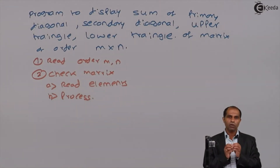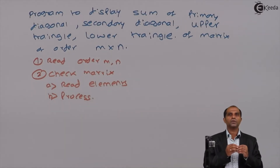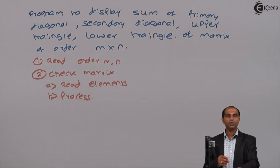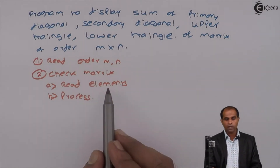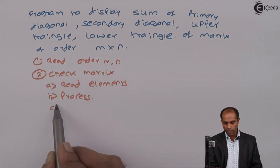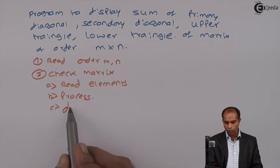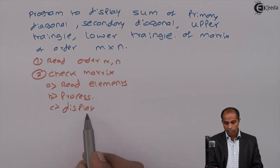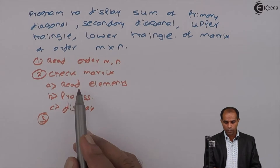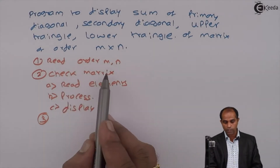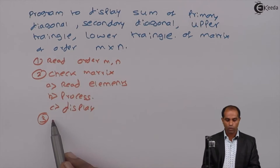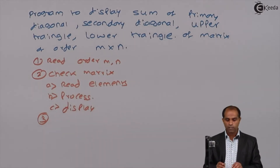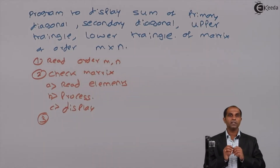First of all I have to read the order and then I'm supposed to check whether the matrix is a square matrix. If the matrix is a square matrix, then I'm supposed to go for doing the operations: read the elements, process the information, and finally display the results. If the matrix is not a square matrix, then you go to step 3 and say that the matrix is not a square matrix, hence the operations are not possible.